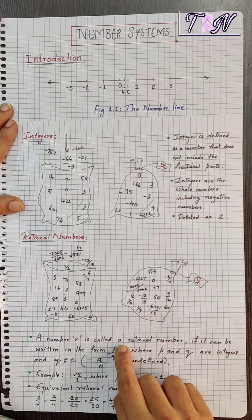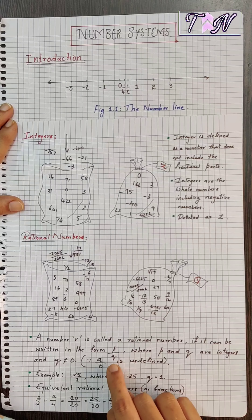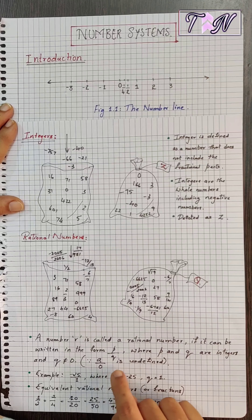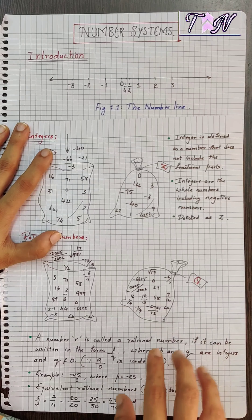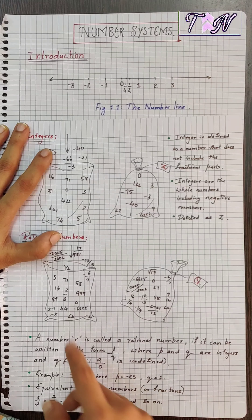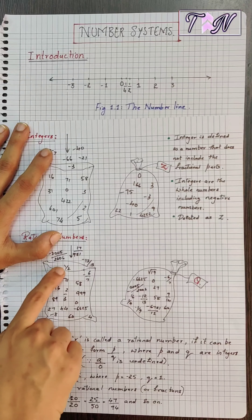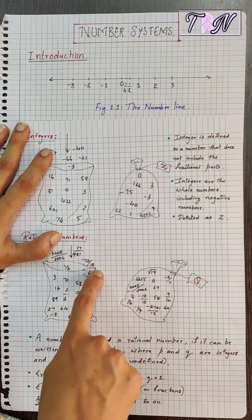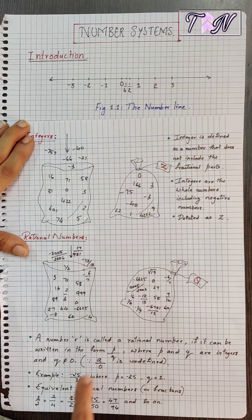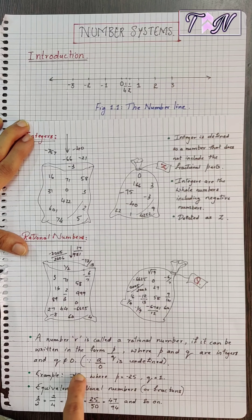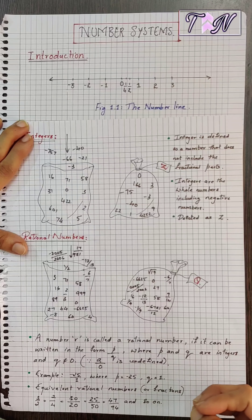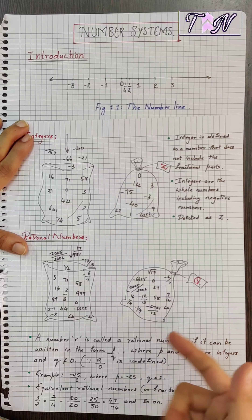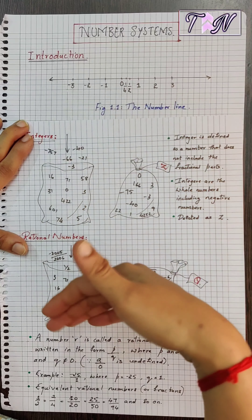When written in the form p/q, the denominator should not equal 0, because any number divided by 0 becomes undefined. Examples of rational numbers include positive fractions like 17/981 and 1/2, as well as negatives like −12/13 and −2005/2006. Also, −25/1 is rational where p = −25 and q = 1. It is evident that rational numbers contain natural numbers, whole numbers, and integers — all the collections we have learned so far.